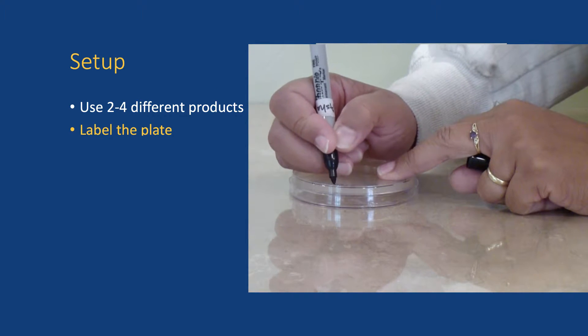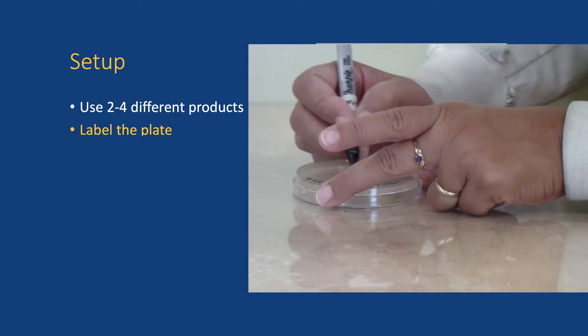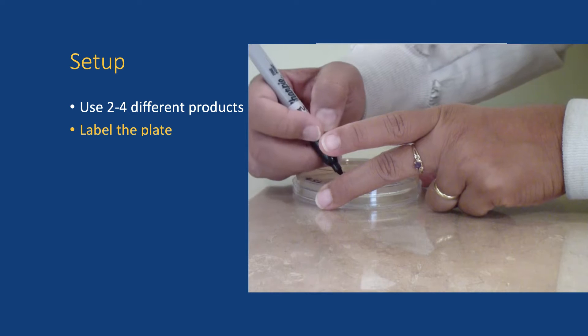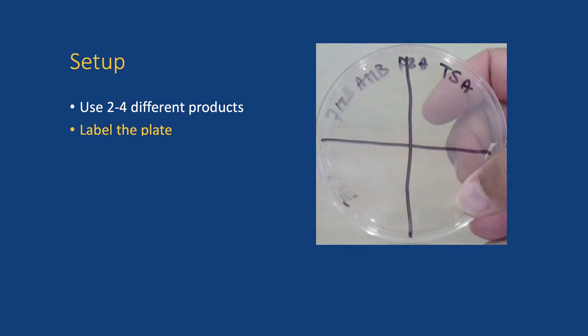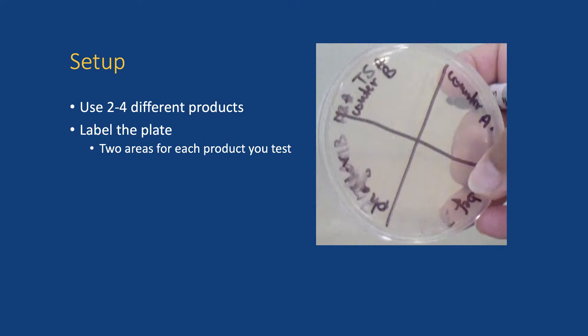Label a TSA plate. With a marker, draw lines to divide the plate into roughly equal segments. You will need two for each chemical. In this example, I will just use two chemicals, so I divide my plate into four equal parts. Label each part and add before and after, so you know which is which.